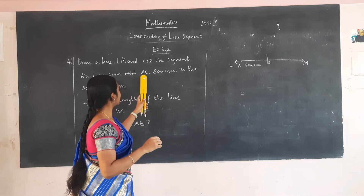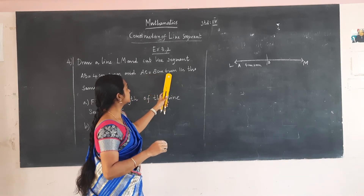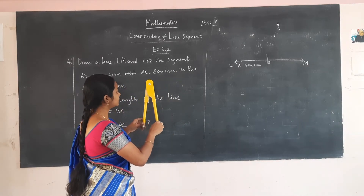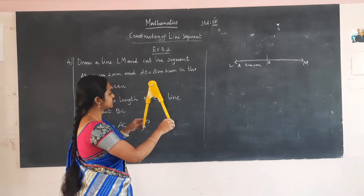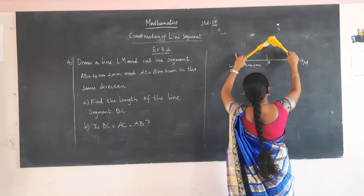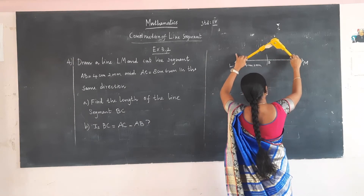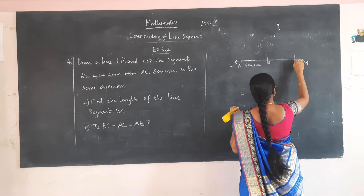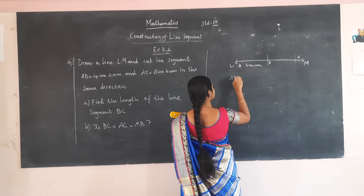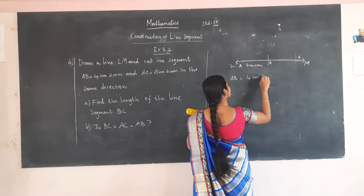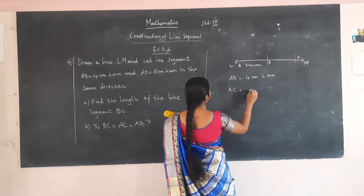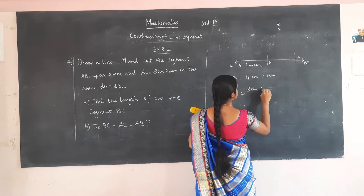Next, we have to draw AC that is 8 cm 6 mm. Keep the sharp point on 0 and move towards the right until you reach 8 cm and 6 mm. Without changing, keep it on A and draw an arc. Let this point be C. AB equals 4 cm 2 mm and AC equals 8 cm 6 mm.